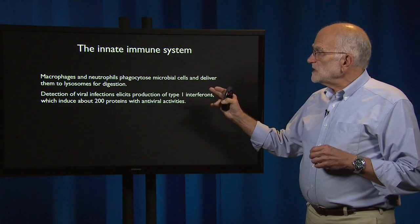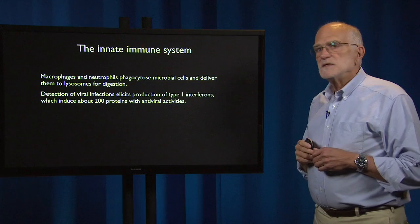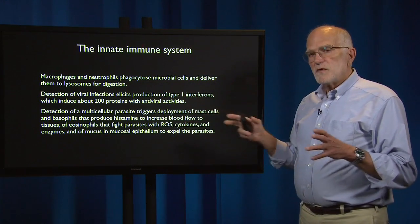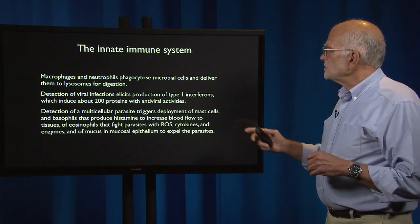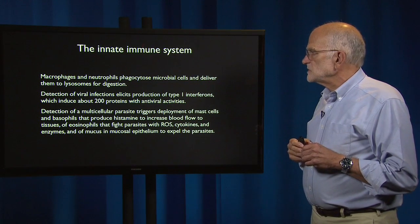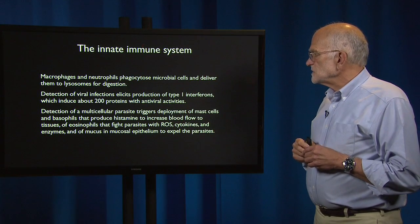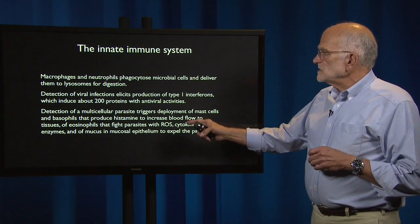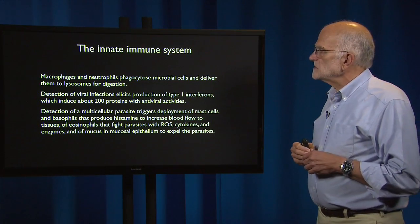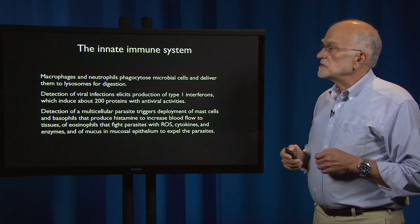The detection of a viral infection elicits production of type 1 interferons, which induce about 200 proteins that have antiviral activities. The detection of a multicellular parasite like a worm triggers deployment of mast cells and basophils. They produce histamine to increase blood flow to the tissues. They produce eosinophils that fight parasites with reactive oxygen species, cytokines, enzymes, and mucus in the mucosal epithelium to expel the parasites. This is a complex and fairly rapid reaction which is part of the innate immune system.